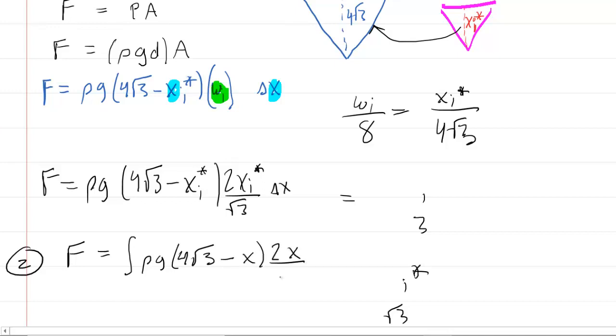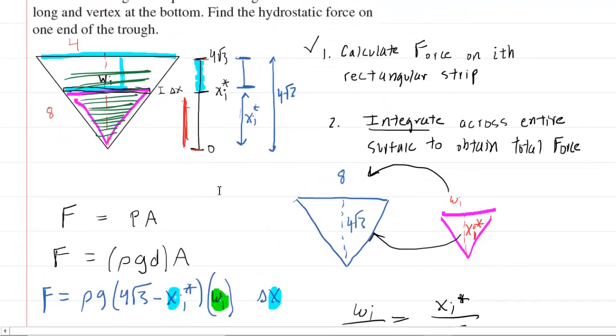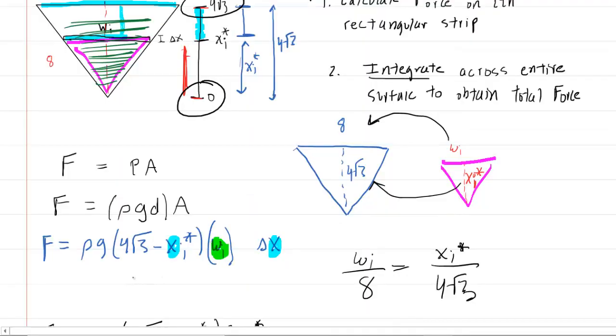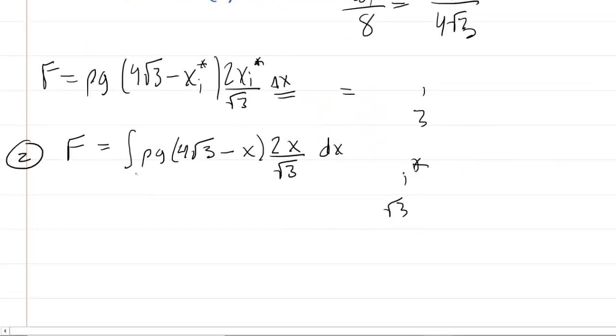And then we're going to write our expression. But everywhere we have that little x sub i star, we can change that to just a variable x. So it begins to look like a standard integral. Also, the delta x becomes dx notation. As for the bounds, you're integrating vertically up the trough. So you're going from zero to four radical three for your lower and upper bounds, respectively.